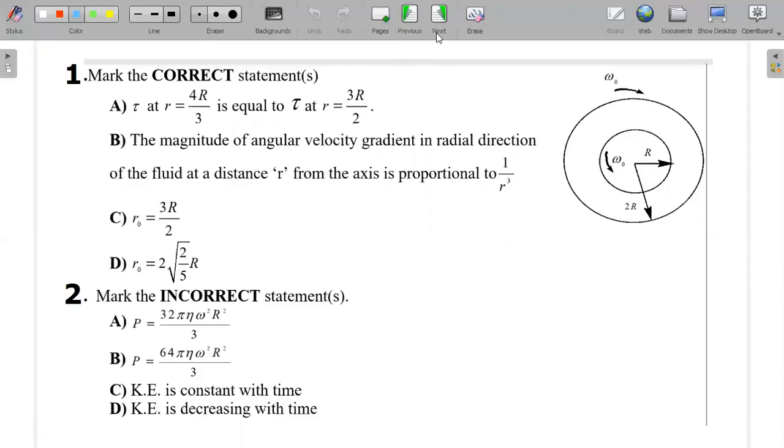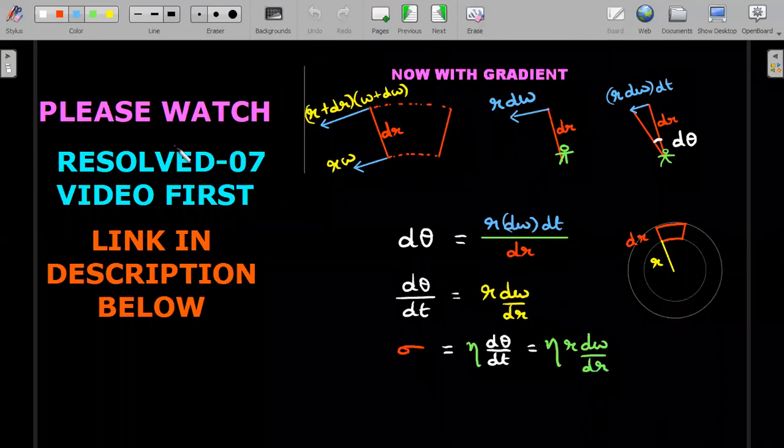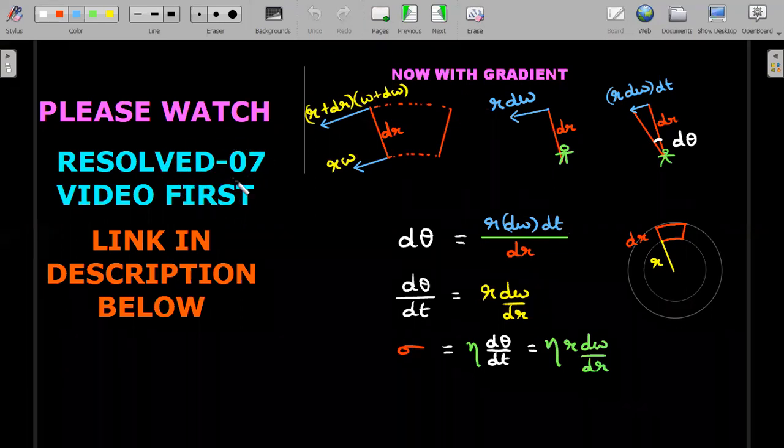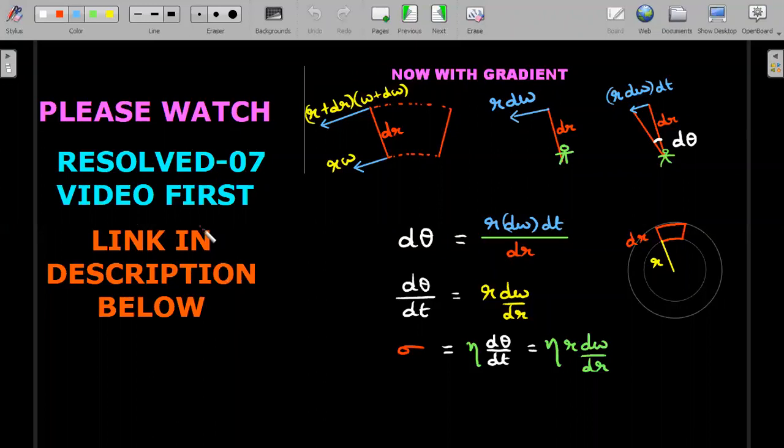Okay, so I would be assuming that you have watched the Resolved 7 video on the rotation viscometer explanation and the link is in description below. So please make sure you pause the video here. Try to look at it or you can just follow this thing but it would be much better if you actually try to go through that because some of the things would be much faster here because I have spent more than 15 minutes in that video to explain the gist of it.